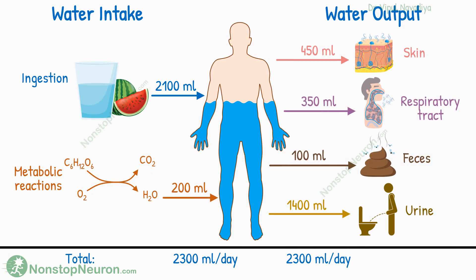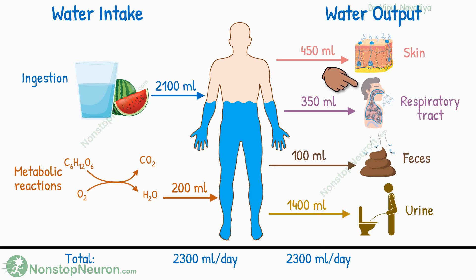So these were all the routes of water intake and output. To summarize: the main sources of water are ingested fluid and food, and synthesis during metabolic reactions. Output occurs from the skin, respiratory tract, feces, and kidneys. Kidneys make the ultimate adjustment in water output to ensure that normal body water levels are maintained at all times.